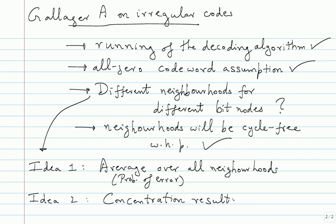Idea 2 — the concentration result — I will only outline briefly. The concentration result comes from martingales; specifically a Doob martingale construction. You can look at the book 'Modern Coding Theory' where they explain this in great detail. It's not very difficult but requires some background. I'll encourage you to look at the proof.